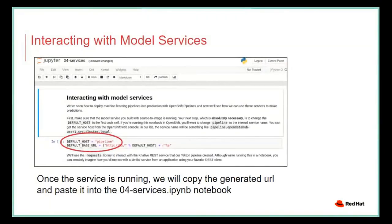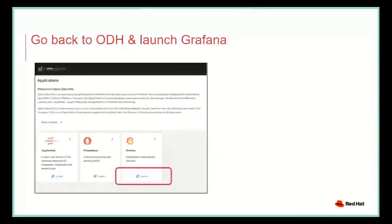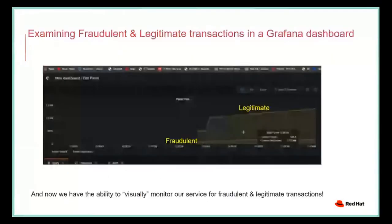Jumping back into Jupyter Notebook to interact with our model service, we replace the default host with the generated URL from the pipeline services. We run our services, make the request, and run our model, which then makes its predictions. We can see a lot of legitimate predictions on the right-hand side under the predictions column. Running the model a bit longer, we'd start to see fraudulent predictions as well. We then go back to ODH and launch Grafana, log in, connect to the pipeline service, and visually monitor our service for fraudulent and legitimate transactions.